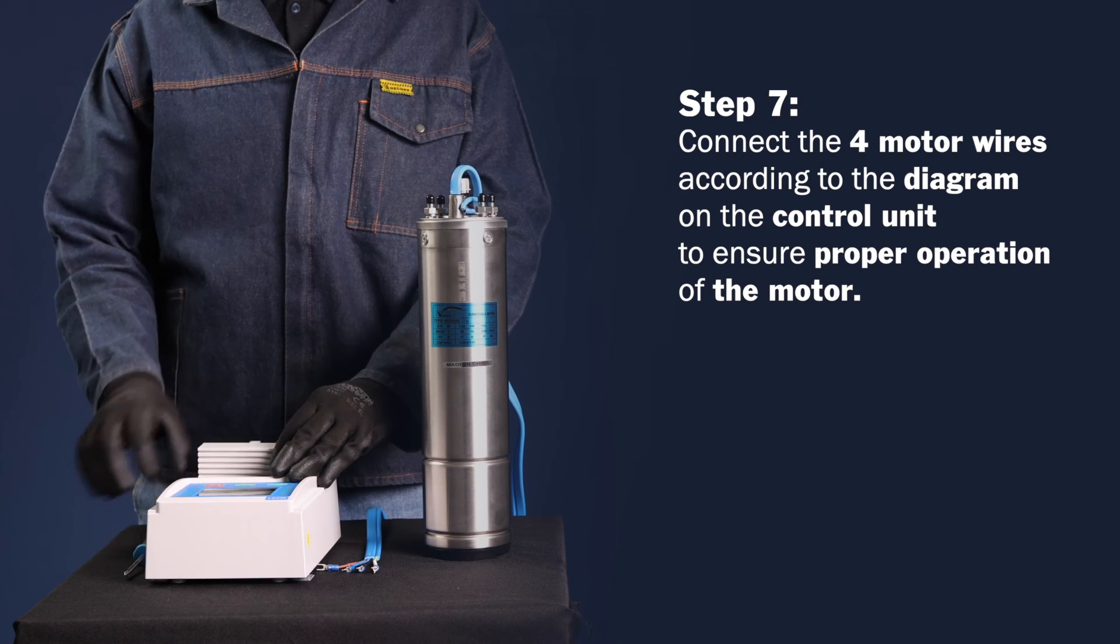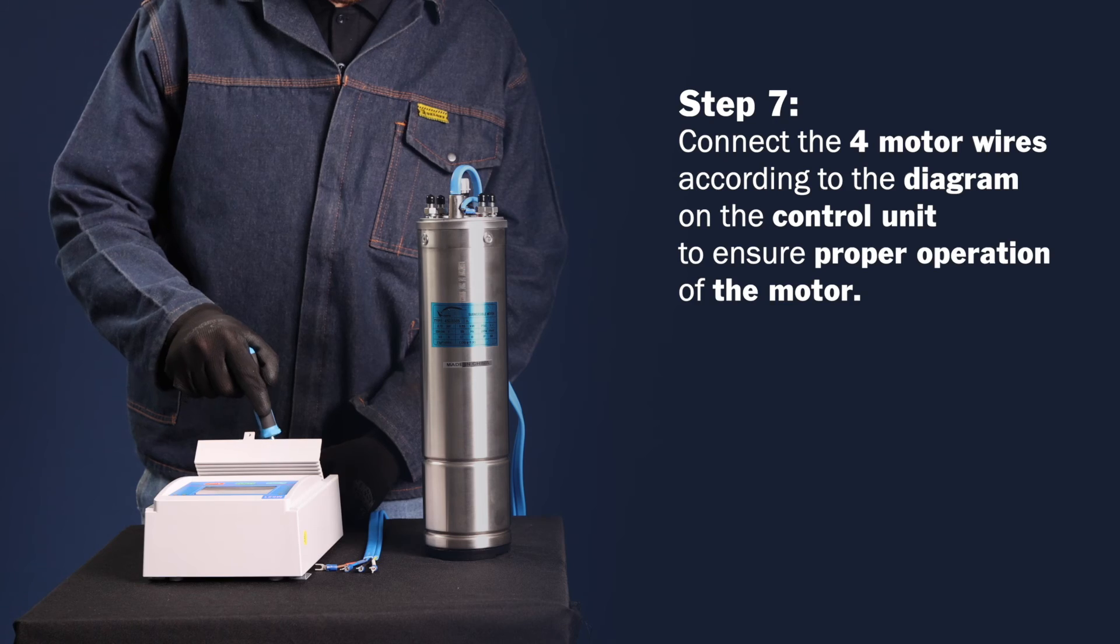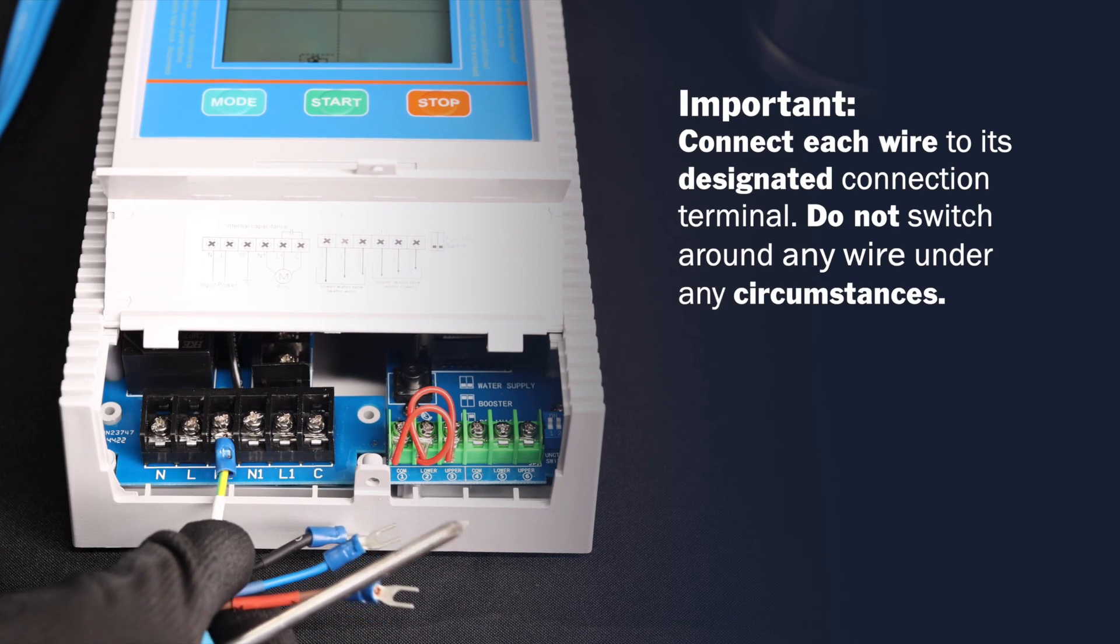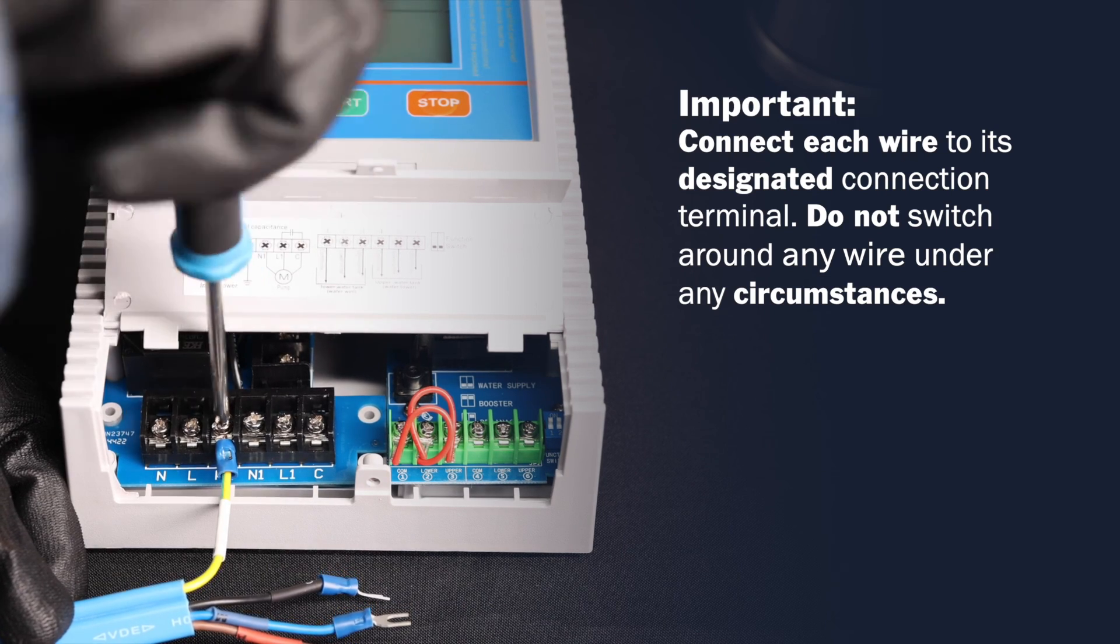Step 7. Connect the four motor wires according to the diagram on the control unit to ensure proper operation of the motor. Please note that each wire has a designated connection terminal and no wires may be switched around under any circumstances.